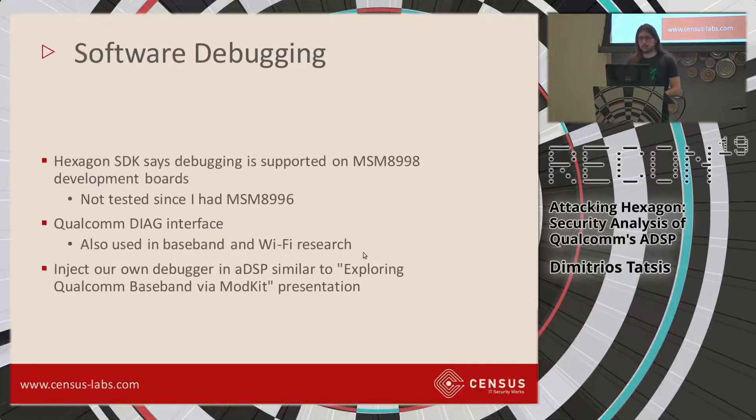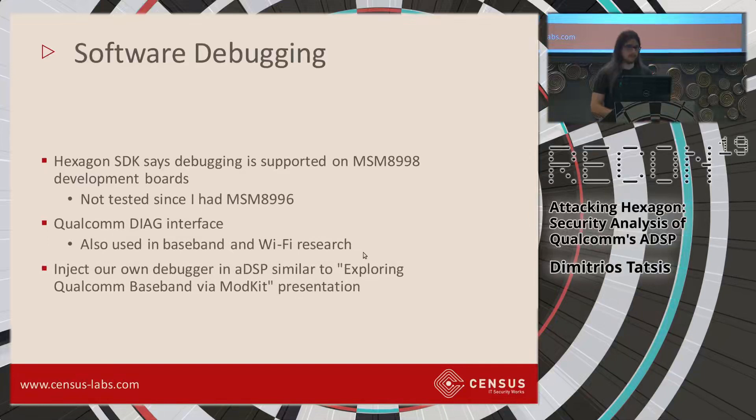For software debugging, Hexagon documentation states it's supported on MSM8998 development boards, but I only had an MSM8996 board so I couldn't use that. Qualcomm also provides the Diag interface, used for baseband and Wi-Fi research for diagnostic messages and debugging. There was also a very interesting talk called 'Exploring Qualcomm Baseband via ModKit,' where they inject their own debugger on the baseband side. Since the baseband has the same architecture and operating system as the ADSP, that work would be straightforward to transfer to the ADSP to get a proper debugging environment.